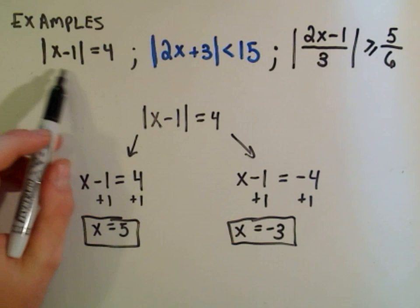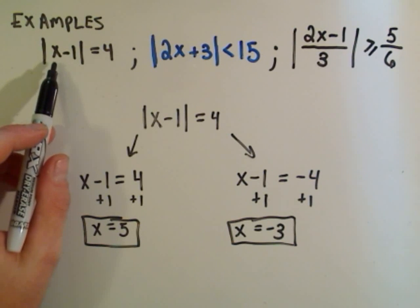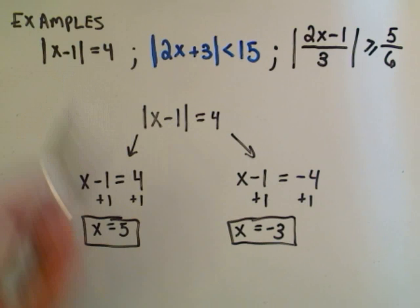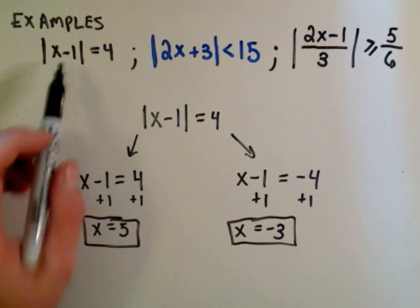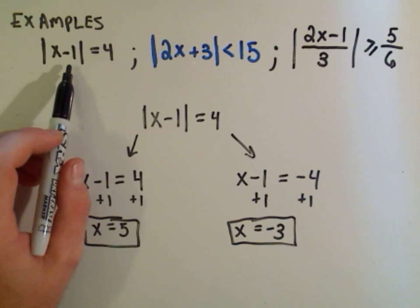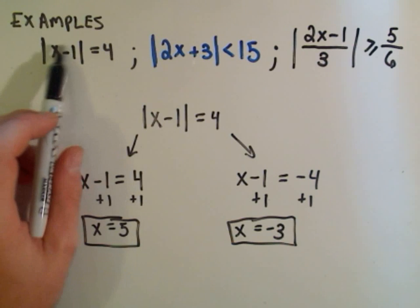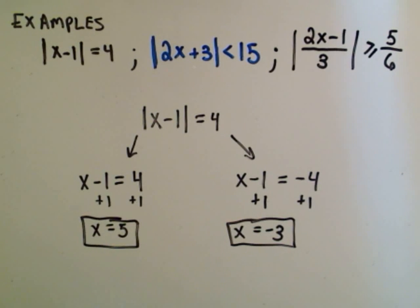You can check that both of those would work. If you plug 5 in, you get 5 minus 1 or 4. If you plug negative 3 in, you get negative 3 minus 1, which is negative 4. But the absolute value of that is just positive 4.